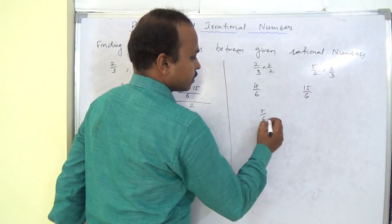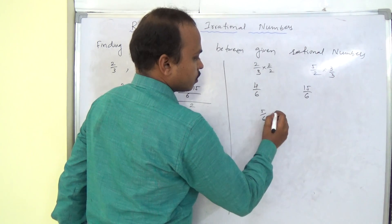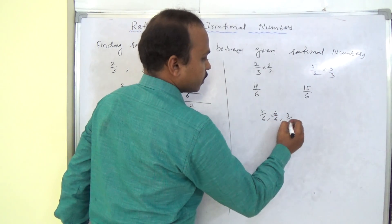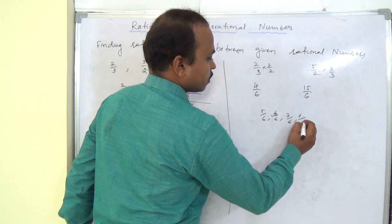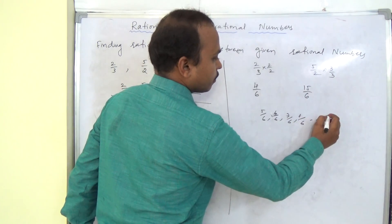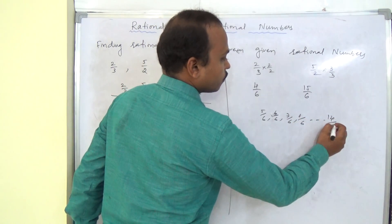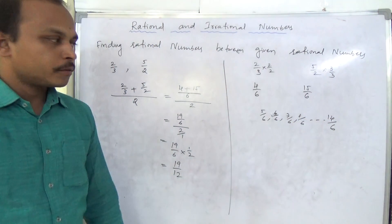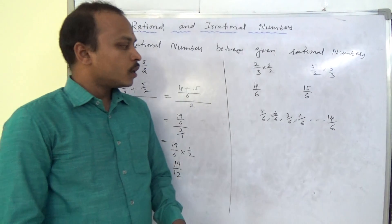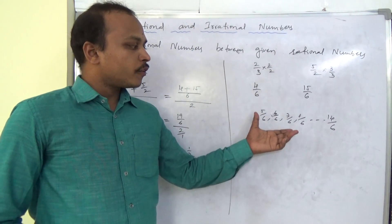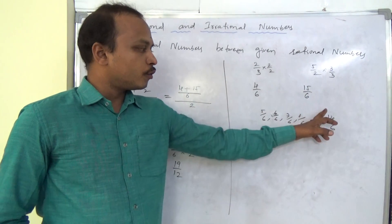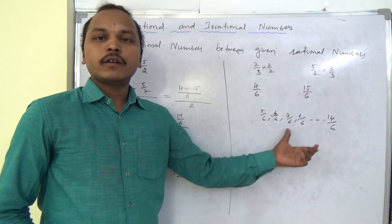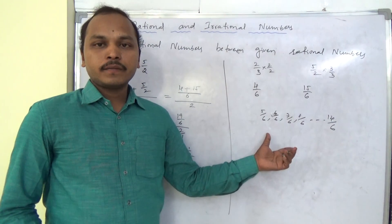Now between 4 by 6 and 15 by 6, we can write many rational numbers. For example: 5 by 6, 6 by 6, 7 by 6, 10 by 6, up to 14 by 6. From numerator 5 to 14, that gives us 10 rational numbers between the two.